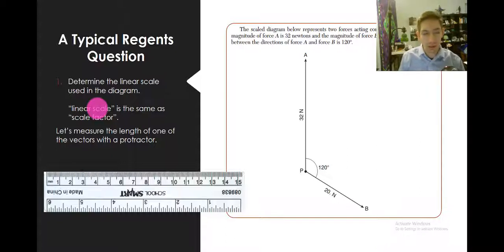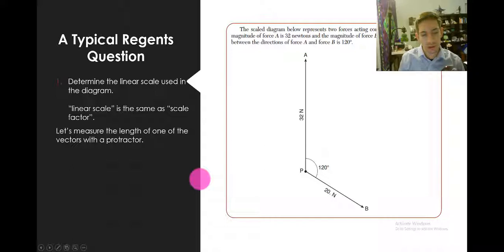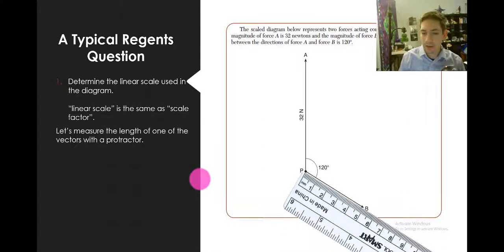So let's measure the length of one of the vectors using a protractor. And I know that this is not a protractor, but protractors are really hard to use with PowerPoint. Alright, so we bring our ruler or protractor up and we measure one of the vectors. It doesn't matter which one we do, whichever one is nicer. And then we say 5 centimeters represents 20 newtons.